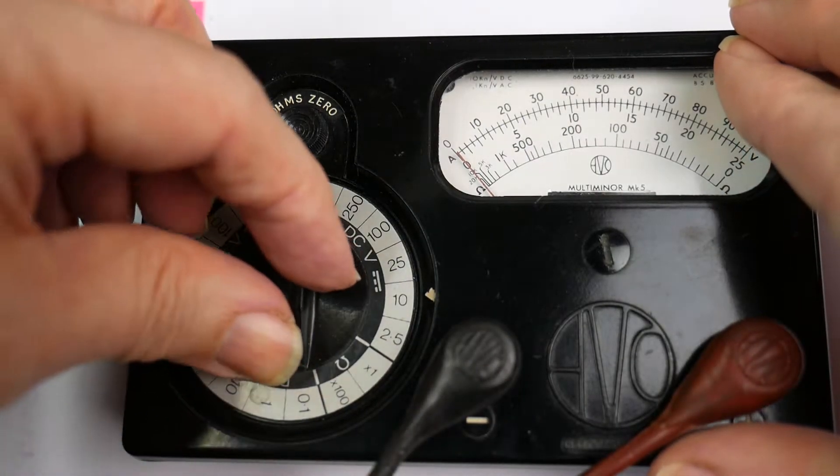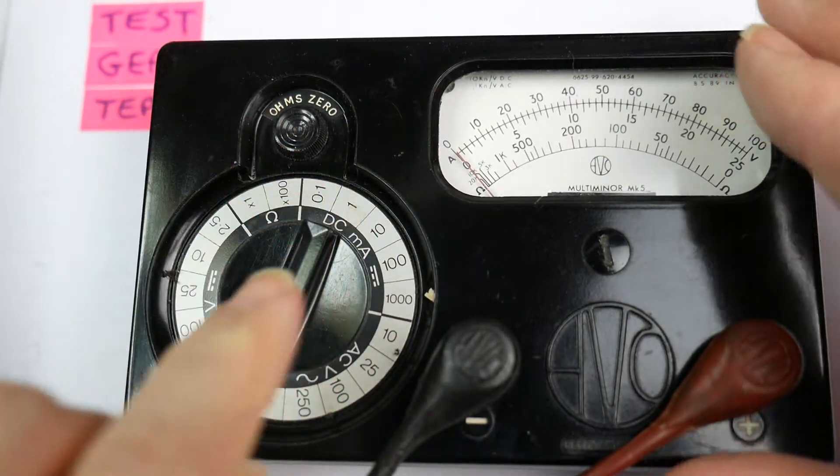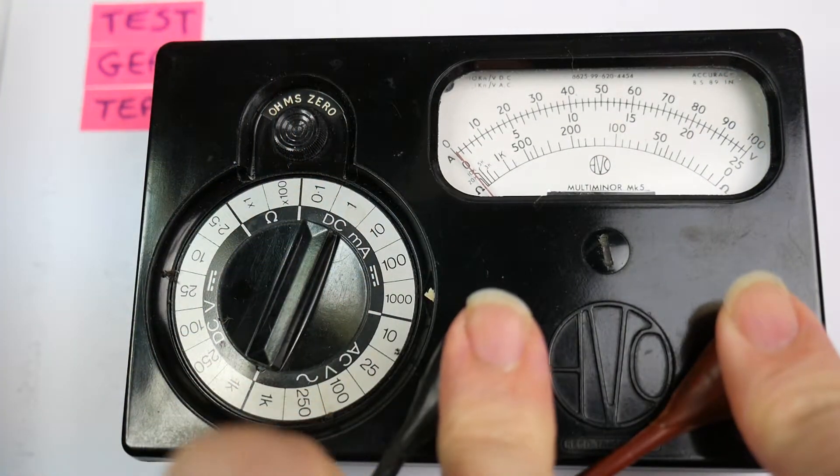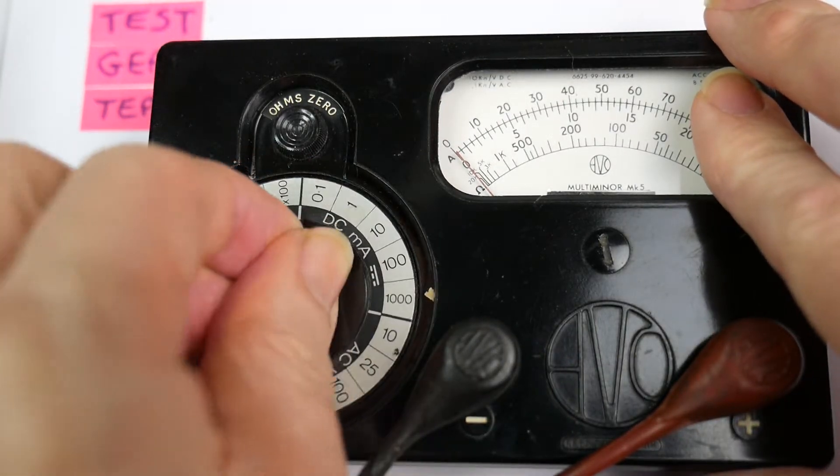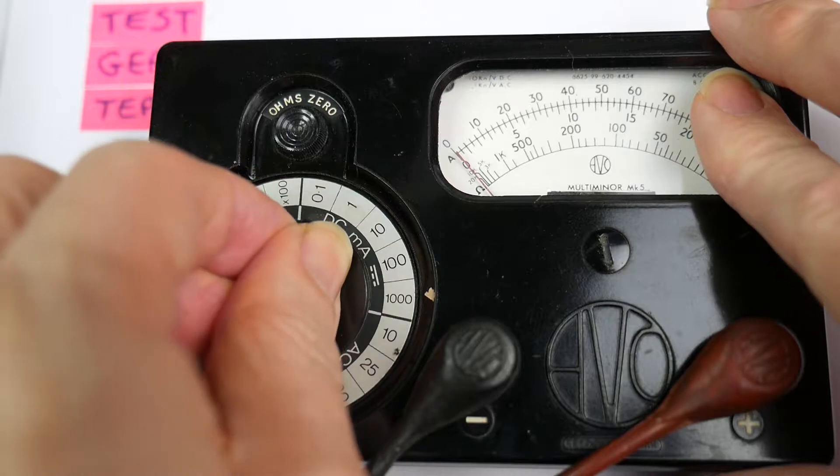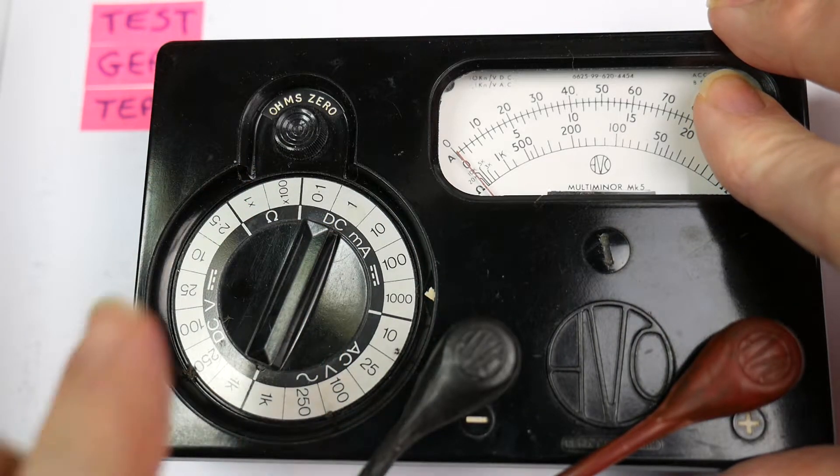If you switch to a current range, you don't have to change the leads over. So there is a risk if you were just turning this dial and you got round to the current ranges and you still had these attached to a voltage source—you're actually shorting the voltage source straight through the meter on a current range.